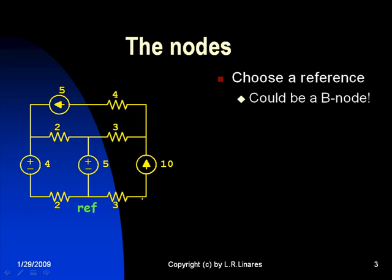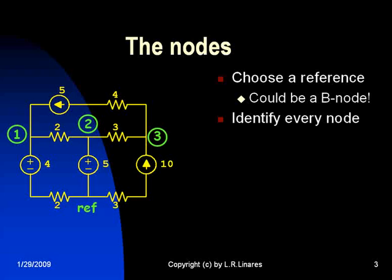It could be a binary node, this node here, this binary node, that binary node, this true node. You have many possibilities. Identify every node. I chose to call them 1, 2, 3 like so. Of course, identify only the true nodes.